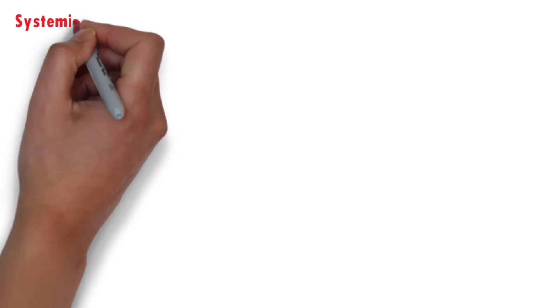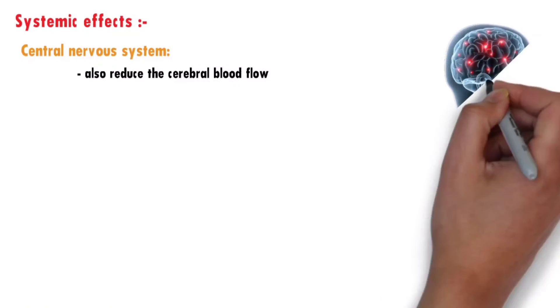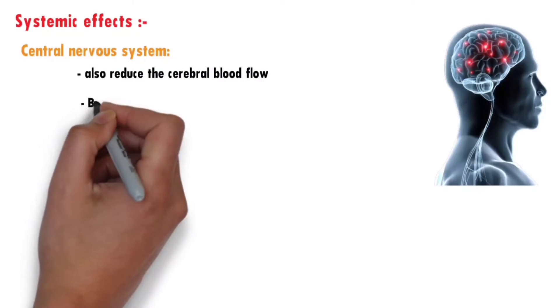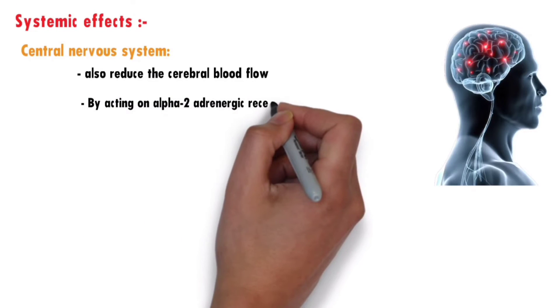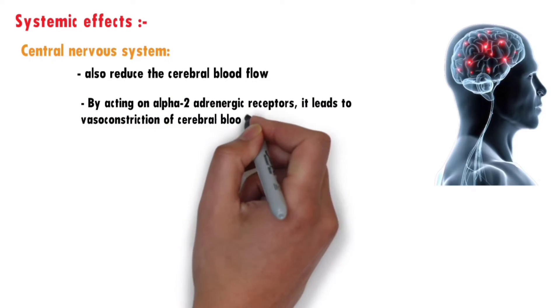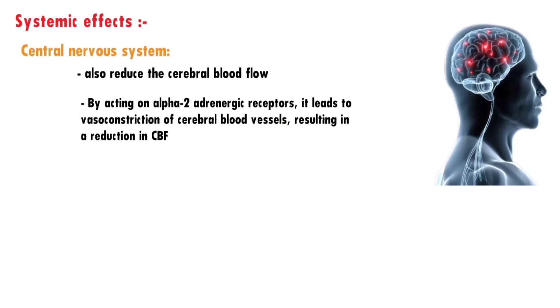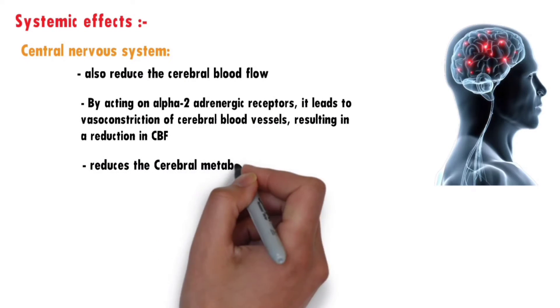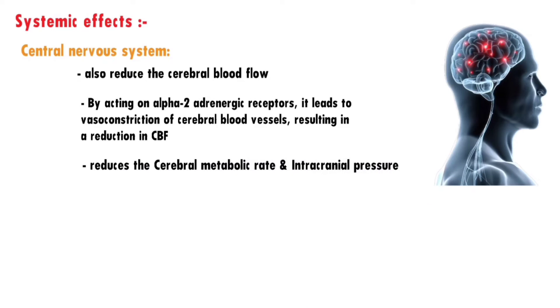Systemic effects — Central nervous system: Like other anesthetic agents, dexmedetomidine reduces cerebral blood flow. By acting on alpha-2 adrenergic receptors, it leads to vasoconstriction of cerebral blood vessels, resulting in a reduction in cerebral blood flow (CBF). This further reduces the cerebral metabolic rate and intracranial pressure.